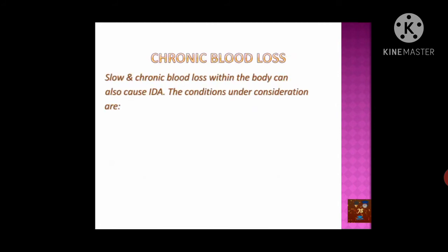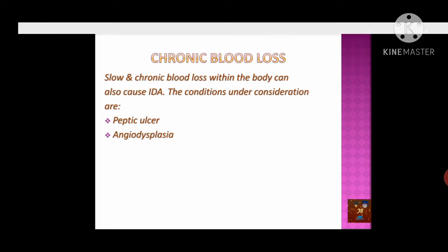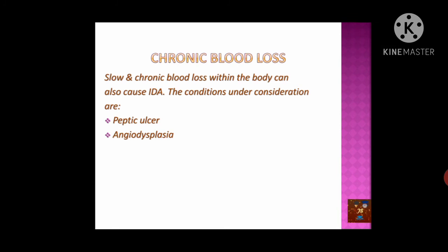Chronic blood loss is another cause of iron deficiency anemia. One reason is peptic ulcer: if untreated, it can cause internal bleeding, and slow chronic internal bleeding gradually removes iron from the body. Another cause is angiodysplasia — abnormality in the blood vessels of the gastrointestinal tract — where enlargement of blood vessels forms lesions in the colon and stomach, with continuous oozing of blood from those sites.